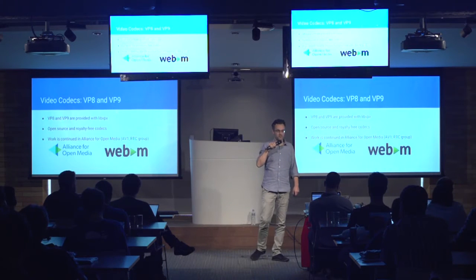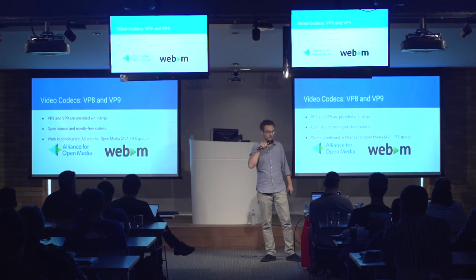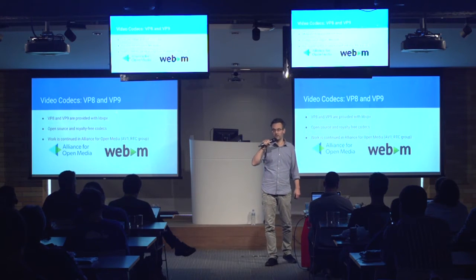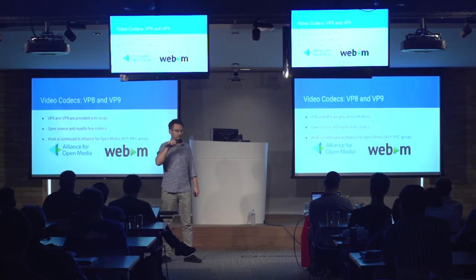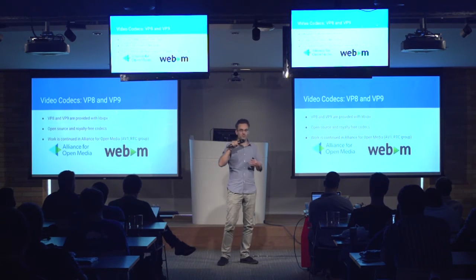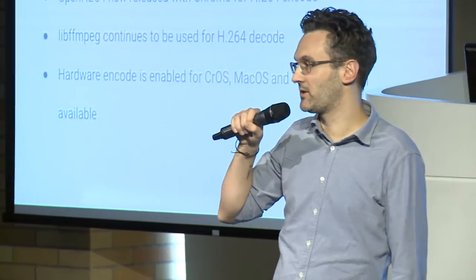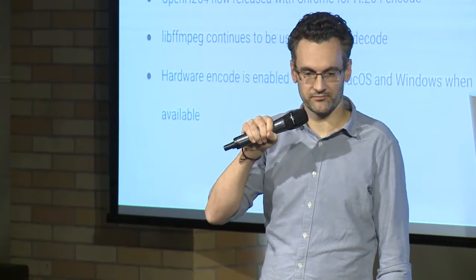The codecs in WebRTC are our own codecs from the WebM project: VP8 and VP9, both provided with libvpx inside Chrome, open source and royalty free. The work started there is now continuing in the Alliance for Open Media, which most big internet players have joined. Importantly, chipset manufacturers have also joined, providing assurance that the next-generation codec will also be hardware enabled. We also committed to supporting H.264 — the legacy video codec — using OpenH264 for encoding, and libffmpeg for decoding in Chrome.